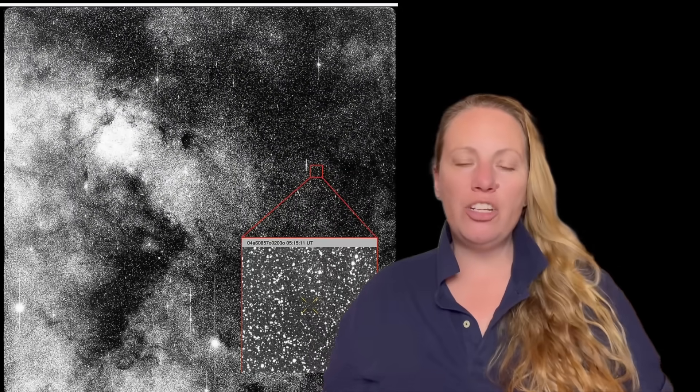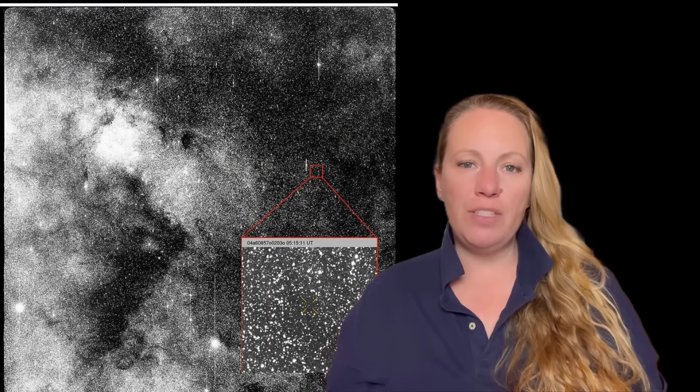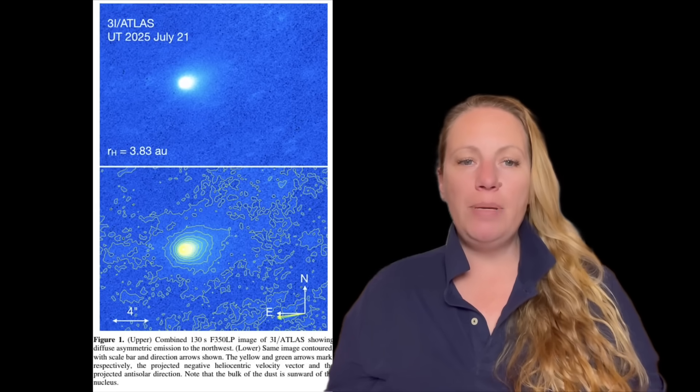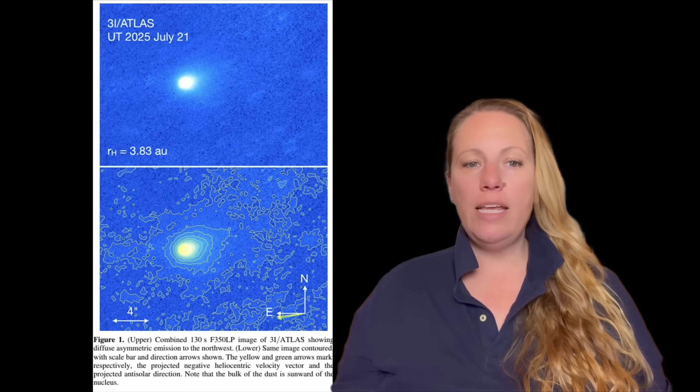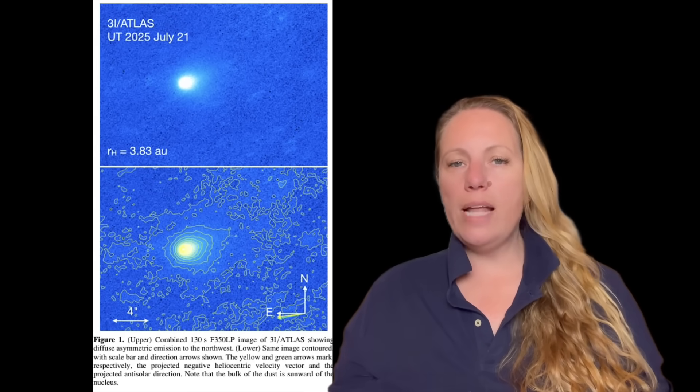It's not in the direction of the sun, it is actually in the direction of motion. In previous images that we have seen, like the Hubble Space Telescope image, the two directions were similar when 3i Atlas was heading towards the sun from far away. So what's happening?